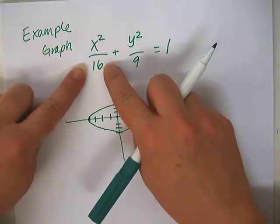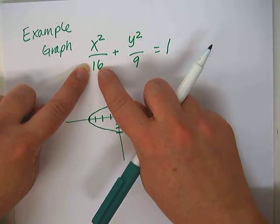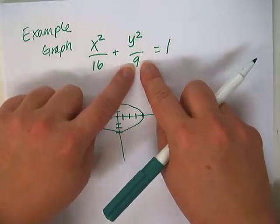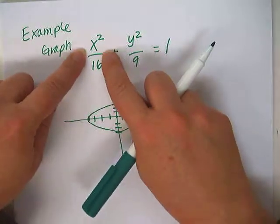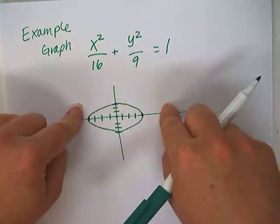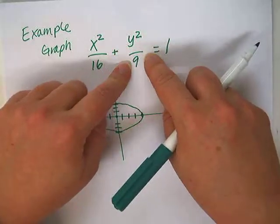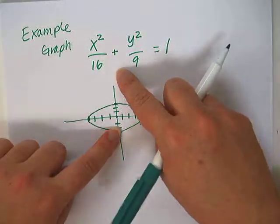So the number under the x is one of the dimensions squared, and the number under the y is the other dimension squared, right? The one under x goes the x direction. The one under y goes the y direction.